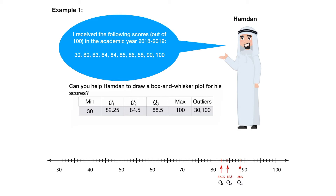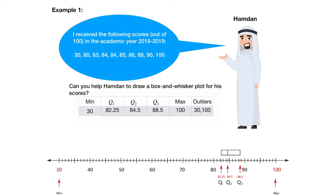We need to draw the box. The box contains three vertical parallel lines and two horizontal parallel lines. Let's start with the vertical lines first. We draw three vertical parallel lines above each of the Q1, Q2, Q3 values on the number line. Now we draw the two horizontal parallel lines to close the box. As we can see from the table, the minimum is 30 and the maximum is 100, and the outliers here are 30 and 100. We draw the outliers using dots, x signs, or asterisks — one above number 30 and another above number 100 on the number line.